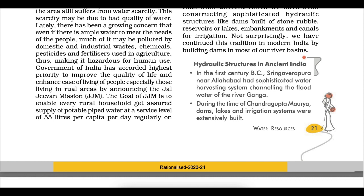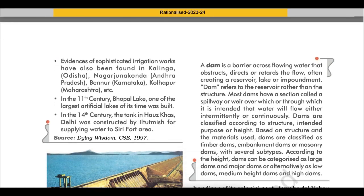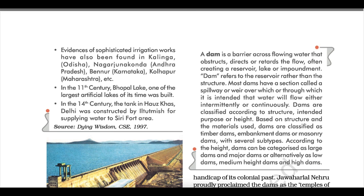Hydraulic structures in ancient India: in the first century BC, Sringaverapura near Allahabad had a sophisticated water harvesting system channelling the floodwater of the Ganga. During the time of Chandragupta Maurya, dams, lakes and irrigation systems were extensively built. Evidences of sophisticated irrigation works have been found in Kalinga (Odisha), Nagarjunakonda (Andhra Pradesh), Bidar (Karnataka), and Kolhapur (Maharashtra). In the 11th century, Bhopal Lake was built, and in the 14th century the tank in Hauz Khas, Delhi was constructed by Iltutmish.